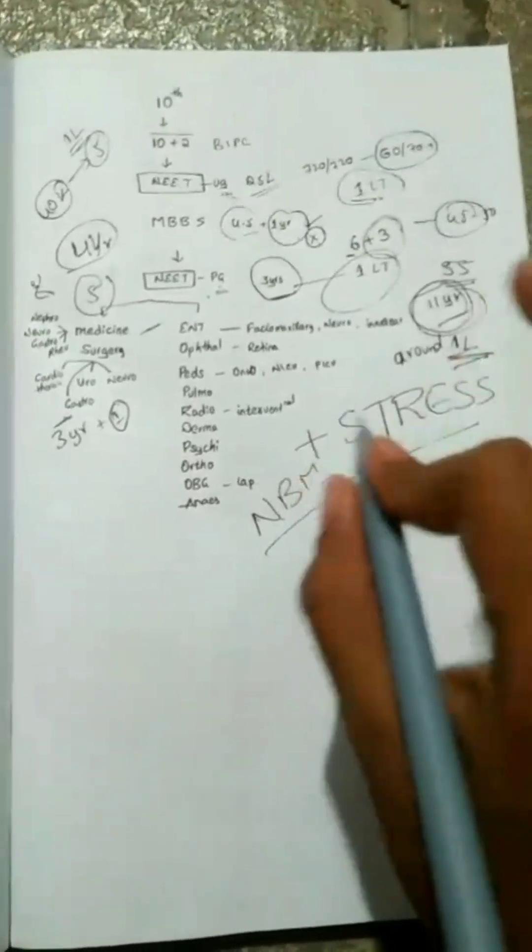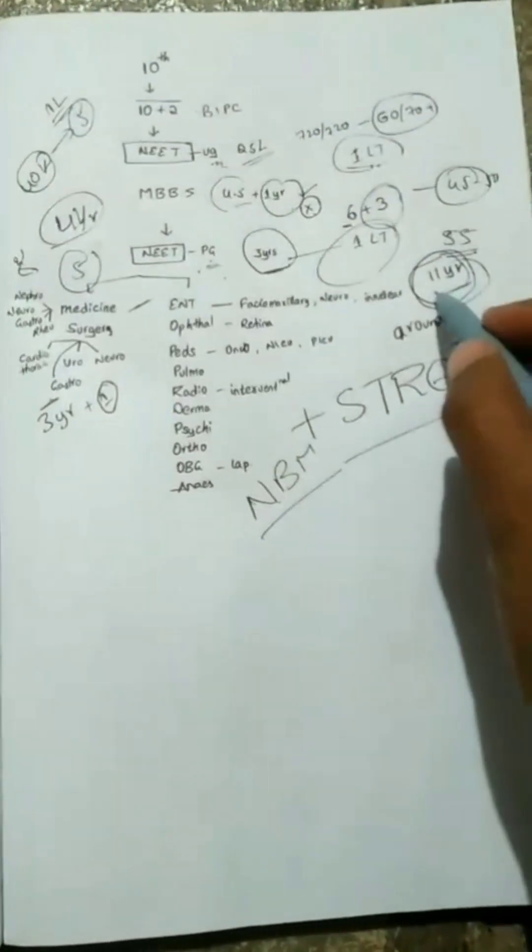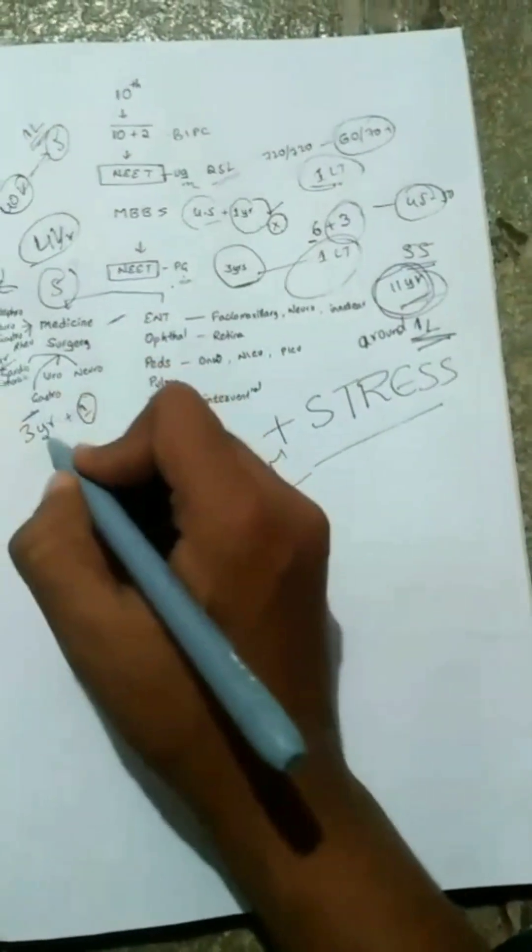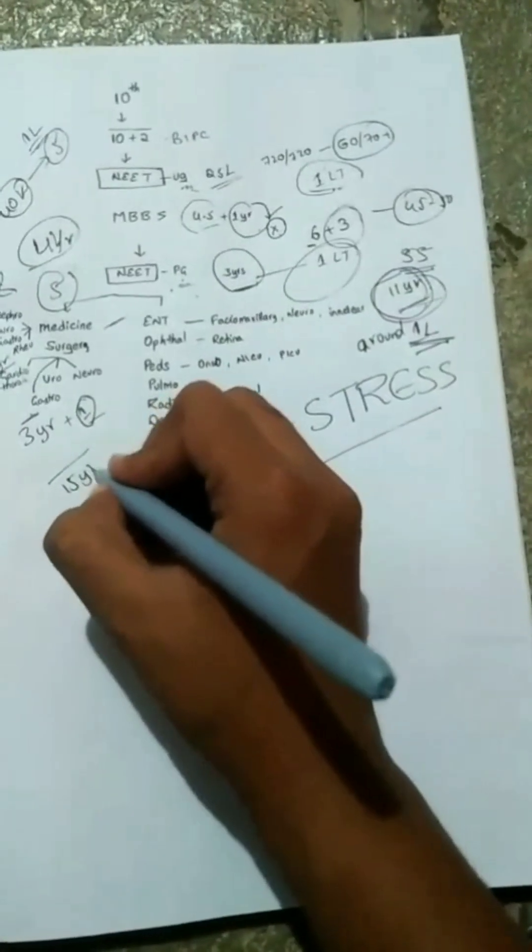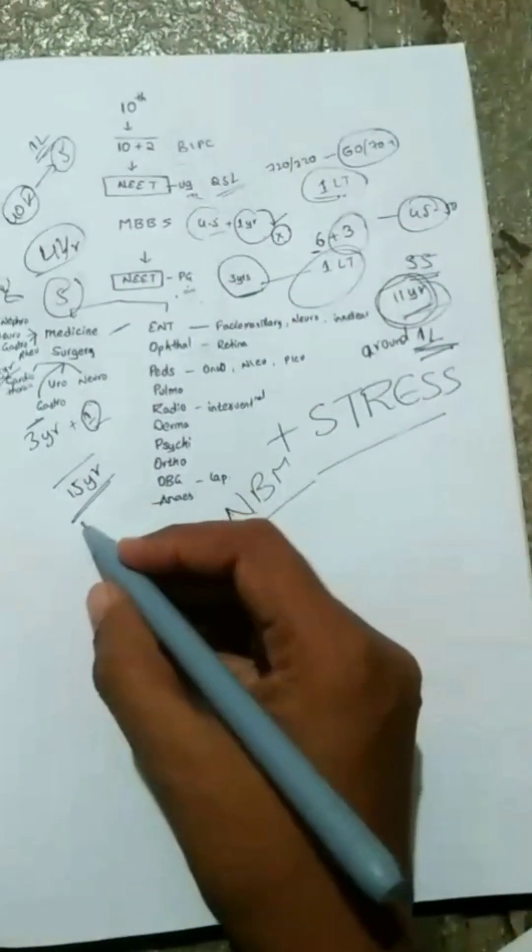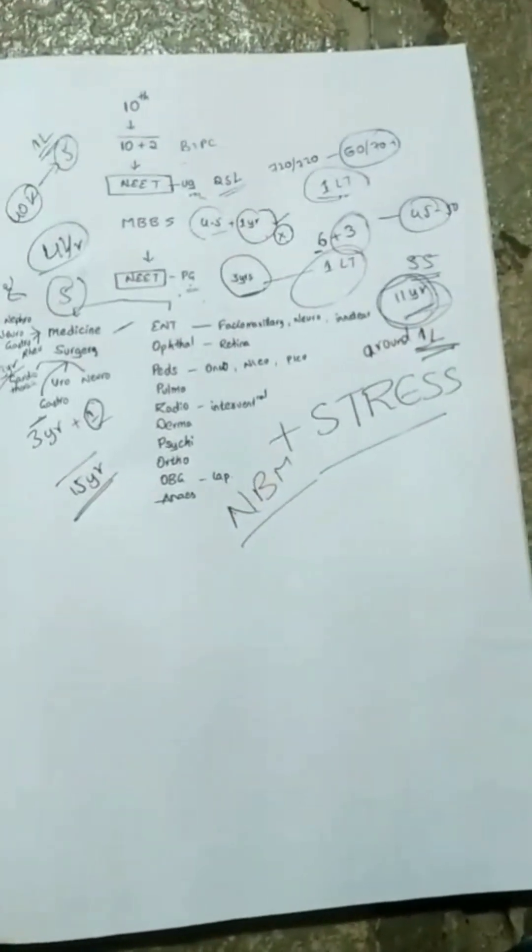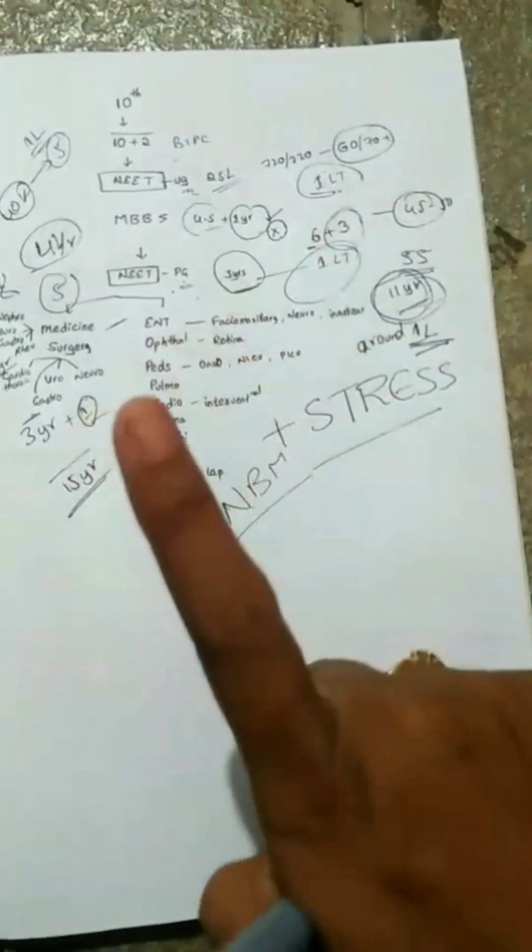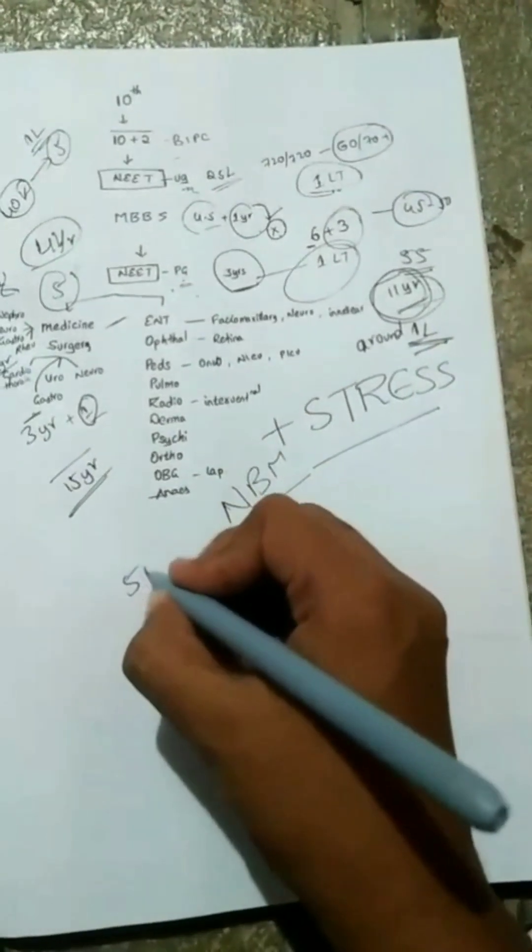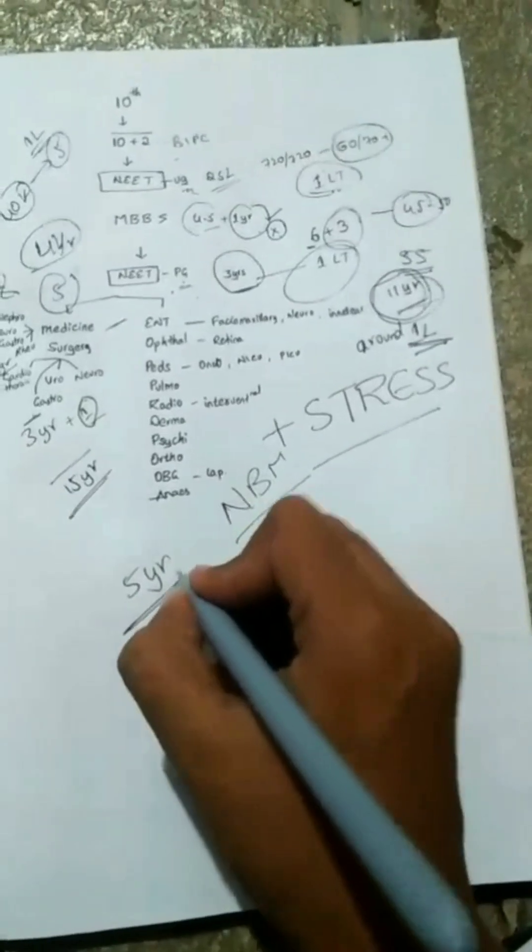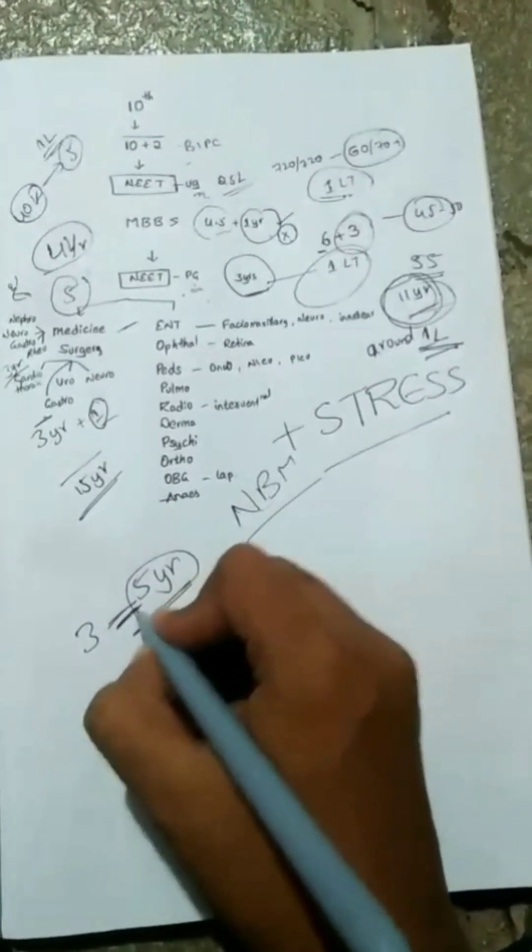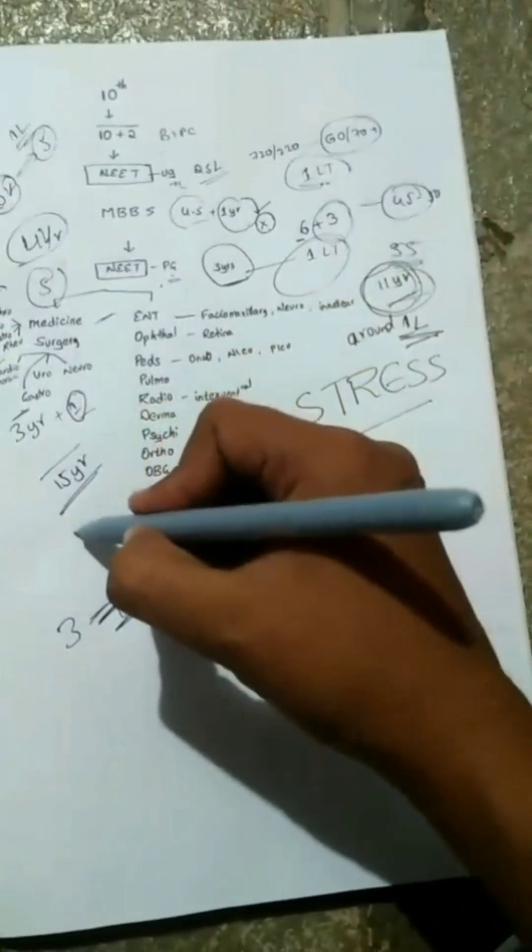If you want to set up a hospital, super specialty is again 3 years. So 11 plus 3 is 14, plus 1 is 15 years. Congratulations, after completion of your BI.P.C. or NEET UG, you will end up with super specialty after 15 years. If you want to build your own hospital, land cost, hospital building setup, and up to 3 to 5 years you will not have that much patient load. You will be settled only after, let's say, 3 to 5 years. So around 20 years.